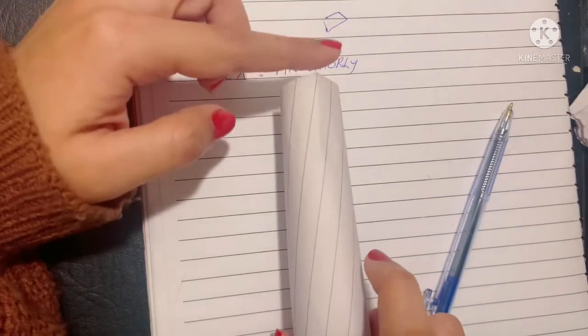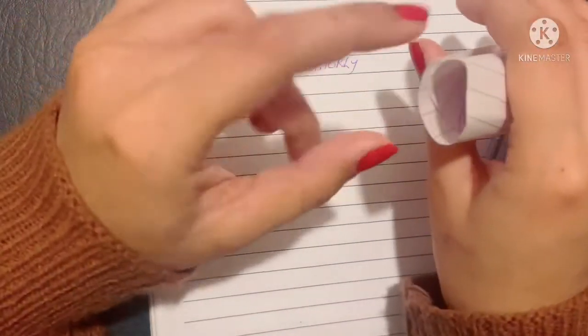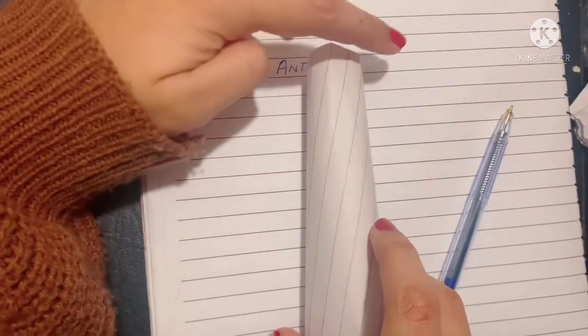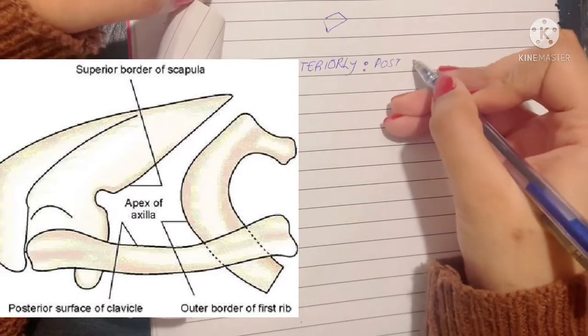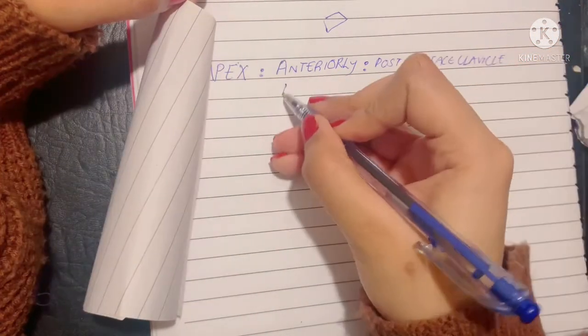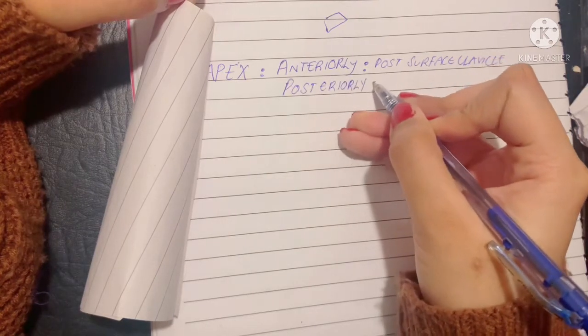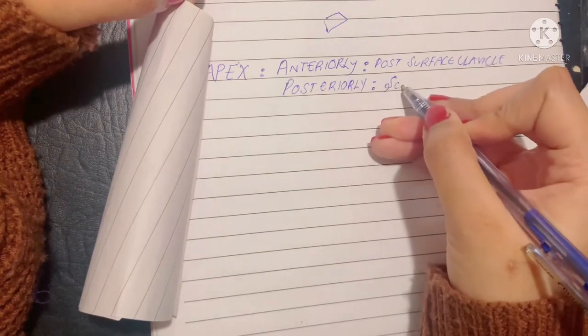Let's begin with talking about the apex. In the anterior part of the apex, the boundary is made up of the posterior surface of the clavicle. Posteriorly is the scapula, or you can say the superior border of the scapula. And medially lies the outer border of the first rib.